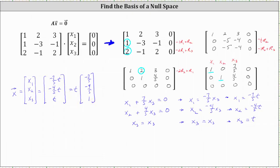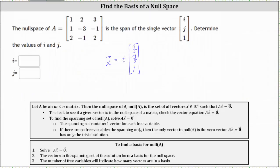Taking this back to the previous slide, since we now know the solution, the vector negative seven-fifths, negative four-fifths, one forms a basis for the null space and spans the null space of matrix A. Comparing with the given vector i, j, one — the third components are both one — therefore i must equal negative seven-fifths and j must equal negative four-fifths. Any scalar multiple of this vector would span the null space of A, but we need the specific vector where the third component equals one.